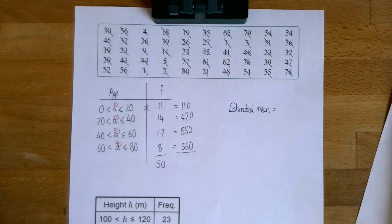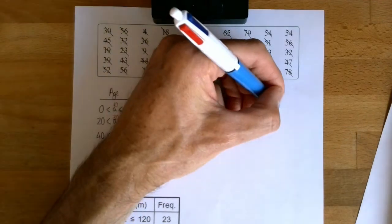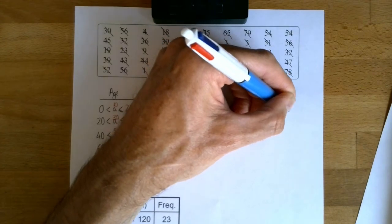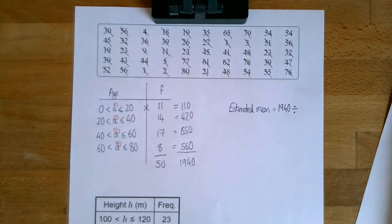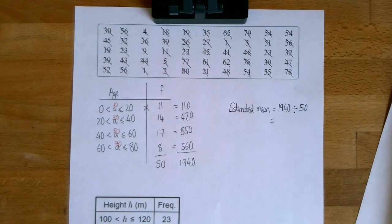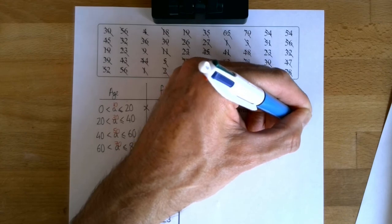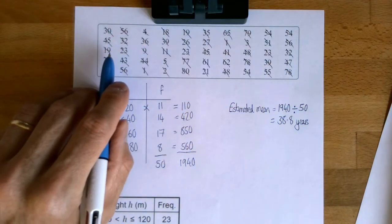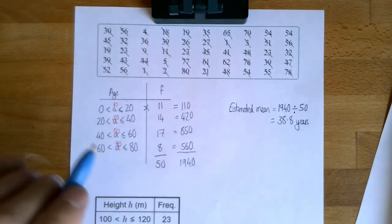Then I'm quickly going to use my calculator to add those up. So I've got 110 plus 420 plus 850 plus 560, which is 1940. So my estimated mean, 1940 is the total of all my ages, well, my estimated total anyway. And that's divided by the number of ages, which is 50. So that gives me 38.8 years. That is the average age, the mean age of everyone in my group, well, at least it's my estimated mean.